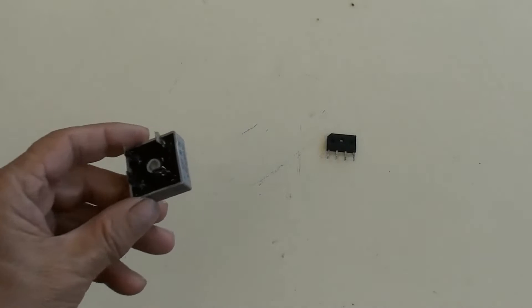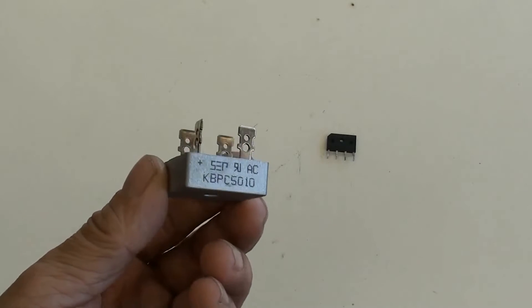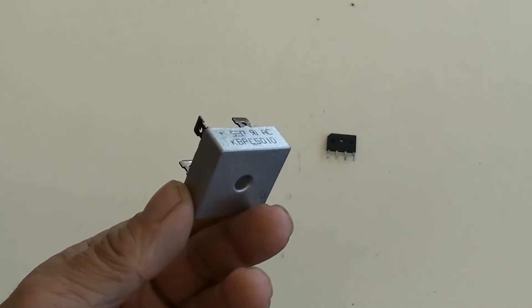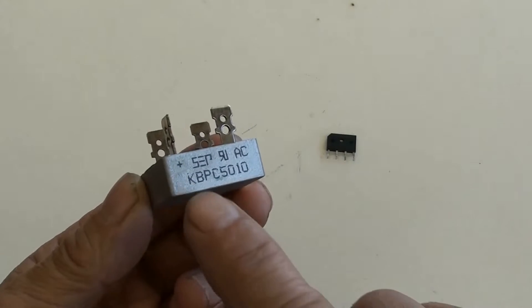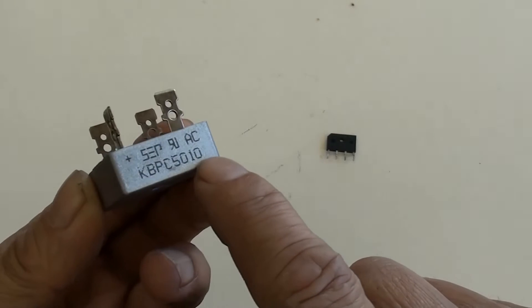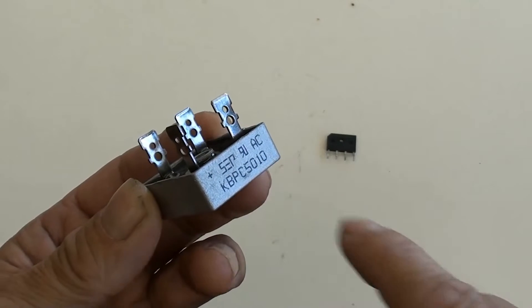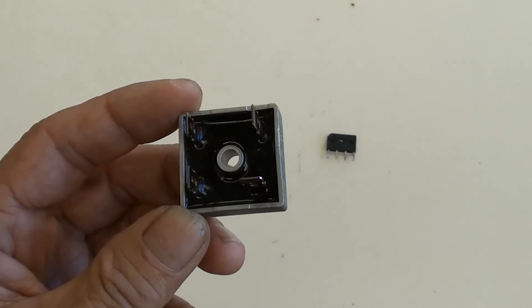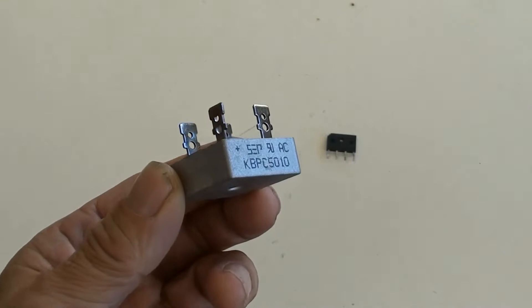This is a metal bridge rectifier. According to its marking, DC 50 amperes and 1000 volt. It has been used in circuit applications for larger current output such as car battery chargers.